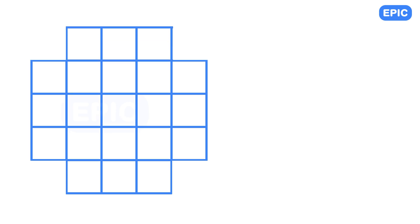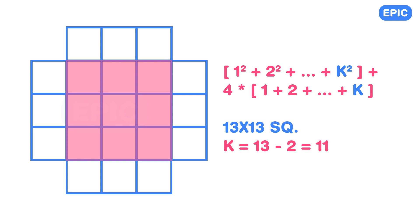Now can we generalize this as a compact formula? Yes we can. The formula will be 1 squared plus 2 squared and so on up to n minus 2 squared, which is the largest square in the middle, plus 4 into 1 plus 2 and so on up to n minus 2. If you replace n minus 2 with k then it is sum of squares of numbers up to k plus 4 into sum of numbers up to k. For a 13 x 13 square, k will be 13 minus 2, 11.